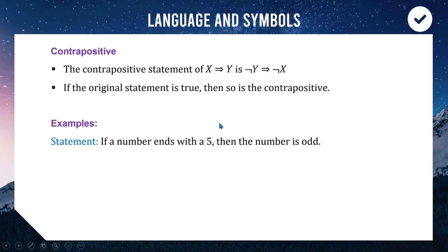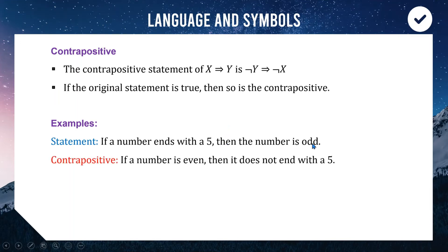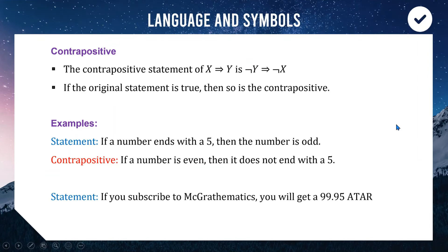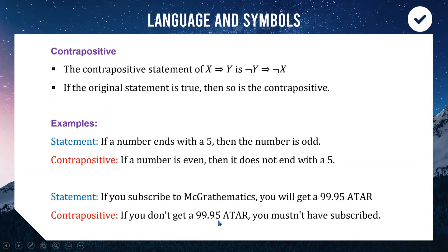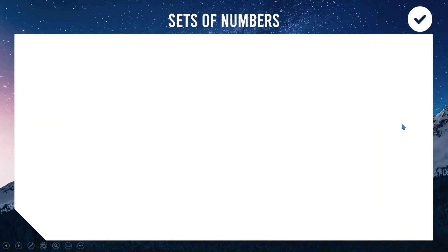The negation of a number being odd is a number being even, and the negation of a number ending in 5 is a number not ending in 5. We reverse the direction, so the even part goes to the front. Another example: 'If you subscribe to McGrathematics, you will get a 99.95 ATAR.' The contrapositive is: 'If you don't get a 99.95 ATAR, you mustn't have subscribed to McGrathematics.' Both halves are negated and the order is reversed — and both statements are true.